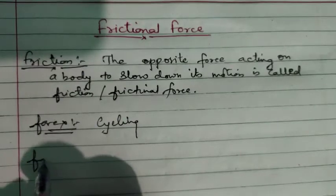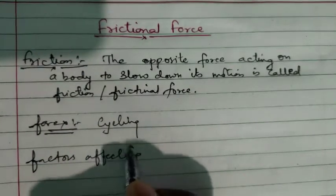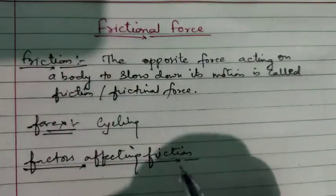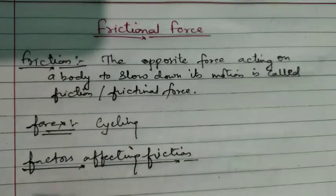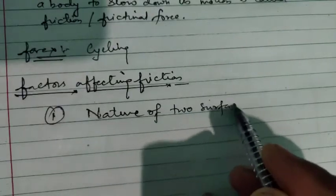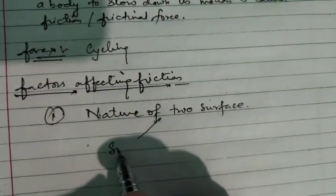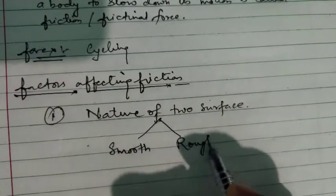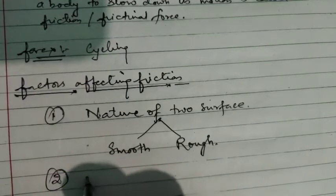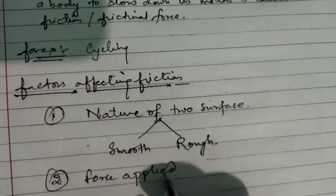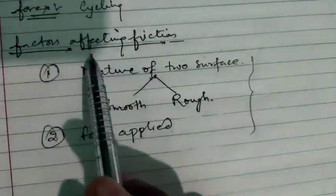Now let us see the next topic: factors affecting friction. What are the factors which affect friction — in which conditions friction is more and in which it is less. There are two factors. First is the nature of two surfaces, and second is the force applied.